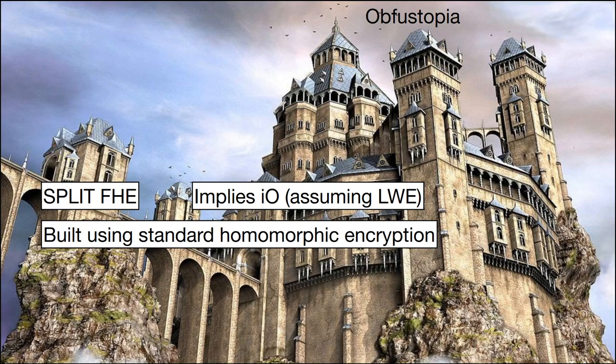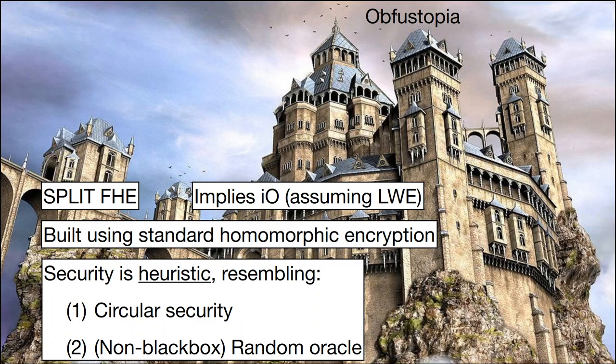We then build an instantiation for split FHE using exclusively standard homomorphic encryption schemes based on standard hardness assumptions in isolation. However, the way we use them is not going to be in a provably secure way; rather, the security of our construction is of a heuristic nature. We take well-established building blocks and use them in an unorthodox way. The heuristics we use have the flavor of common heuristics in cryptography — specifically, circular security, which says that an encryption scheme stays secure even if its secret key is encrypted, and the random oracle model. We will actually use the code of the random oracle model, and I will describe this heuristic in more detail later.